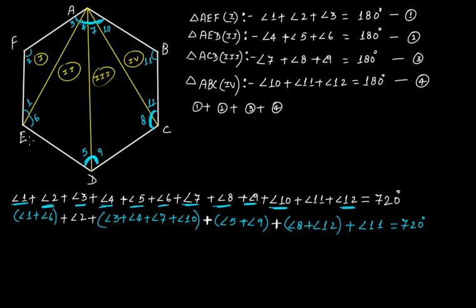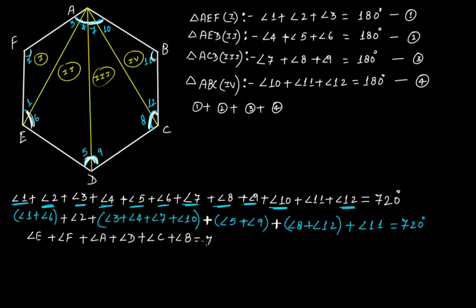So, angle 1 plus angle 6 is angle E, angle 2 is angle F, angle A, angle 5 plus angle 9 is angle D, angle 12 is angle C, and angle 11 is angle B. Rearranging: angle A plus angle B plus angle C plus angle D plus angle E plus angle F is equal to 720 degrees.